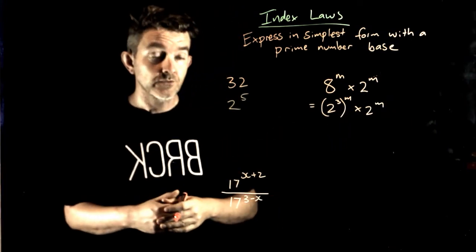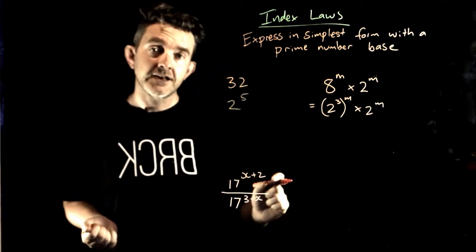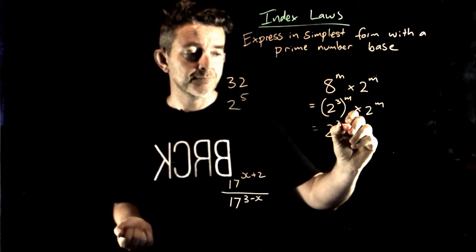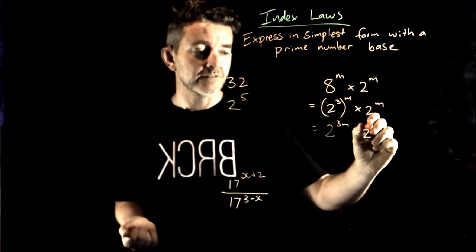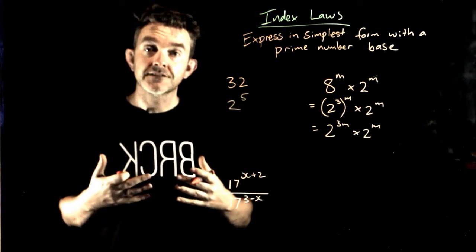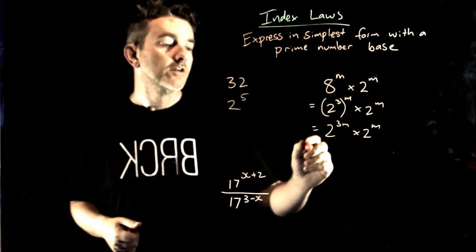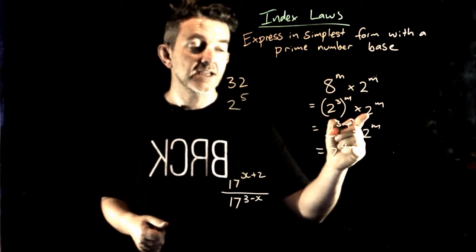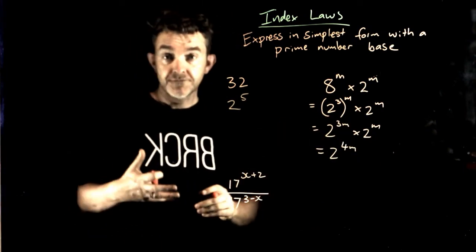Now I need to apply my index laws. If I've got a power inside and outside, I multiply them together. That's 2 to the power of 3m times 2 to the power of m. Now I can add those two powers together because the bases are the same. So it's equal to 2 to the power of 4m. 3m plus another m is 4m.